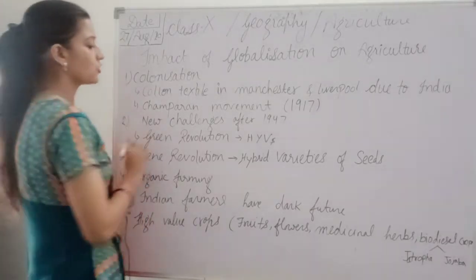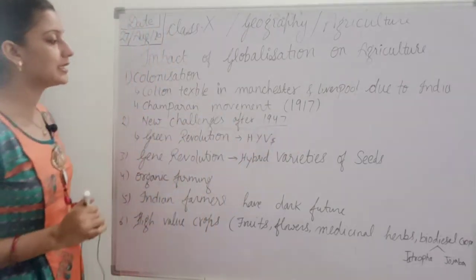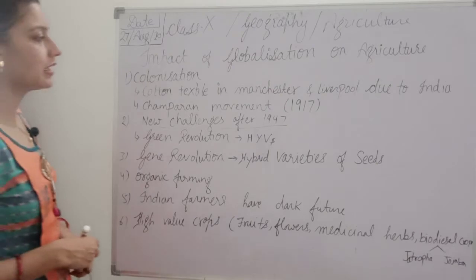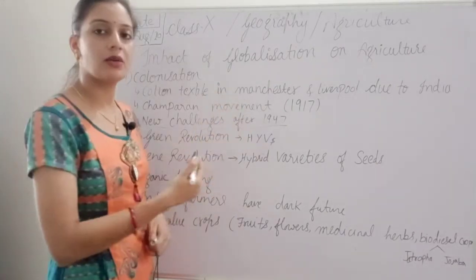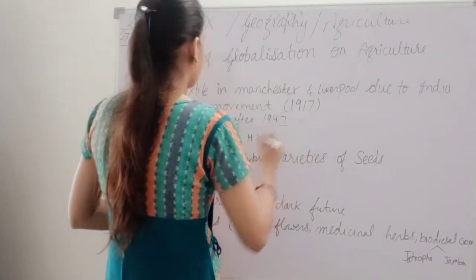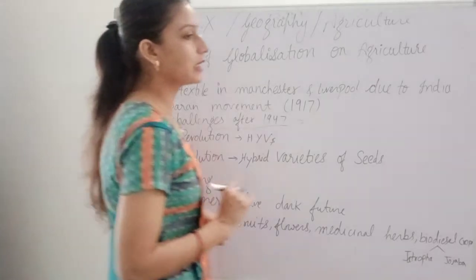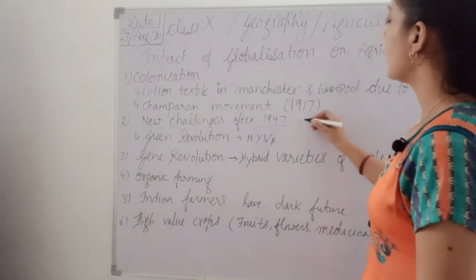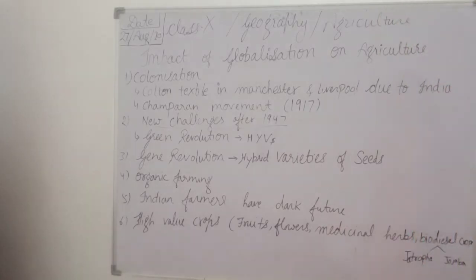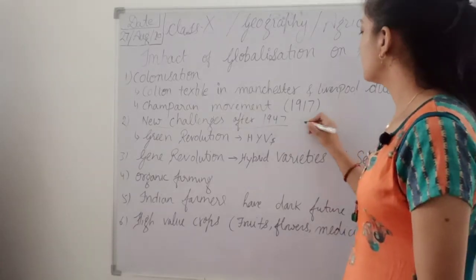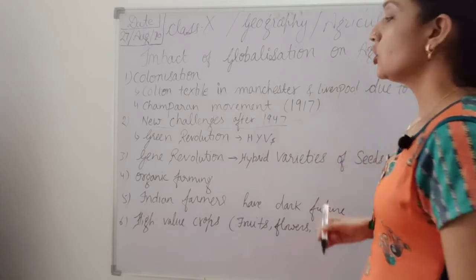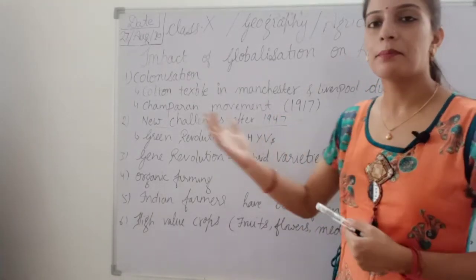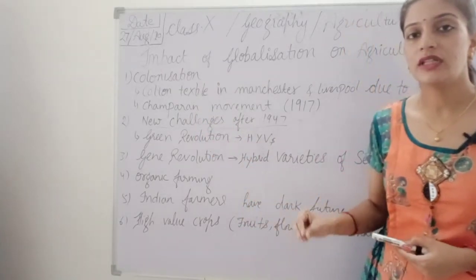There were new challenges faced by India after 1947, when India got independence. Due to the various changes made during British rule and the indigo cultivation, the soil became barren. As a result, after independence India was not capable of fulfilling the food needs of its own people. So at that time, in the beginning, India used to import grains just to fulfill the needs of its citizens.